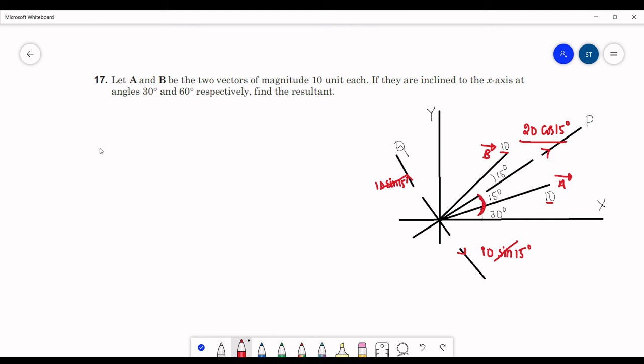So we can say the final resultant will have a magnitude of 20 cos 15 and it will be making an angle 45 degrees with the x-axis. This will be the final answer for this question.